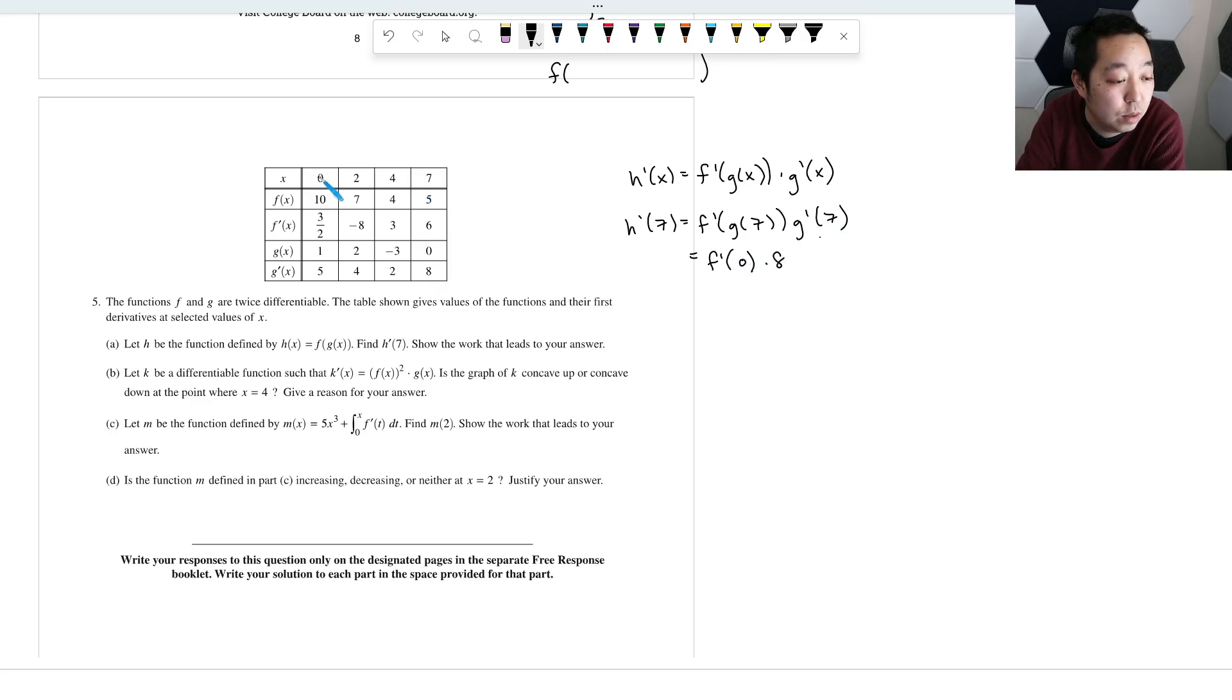Now, what is f prime at 0? That's 3 halves. So 3 halves times 8. Oops. 3 halves times 8, and that's going to be 12. Okay.